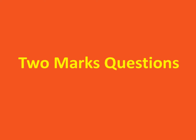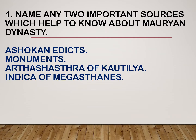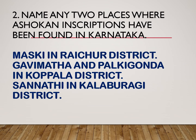Two marks questions. Name any two important sources which help us to know about the Mauryan dynasty. Answer: Ashoka edicts and monuments, Arthashastra of Kautilya, Indica of Megasthenes. Name any two places where Ashoka inscriptions have been found in Karnataka.